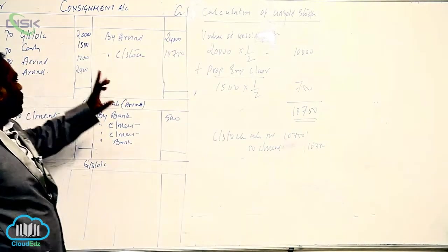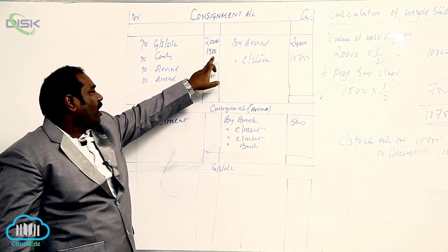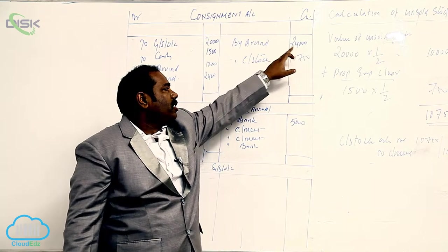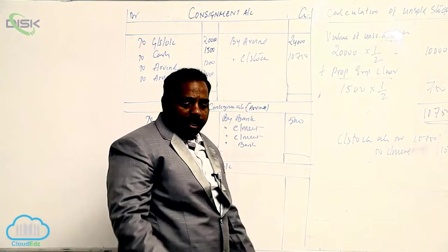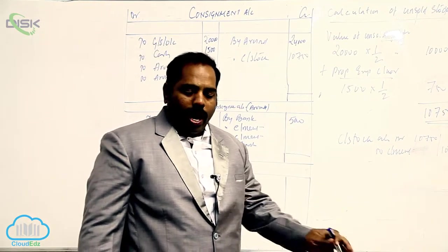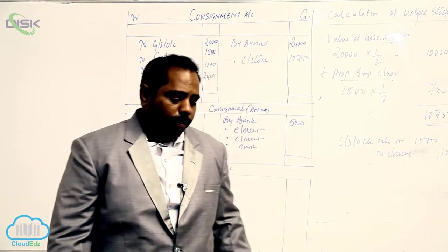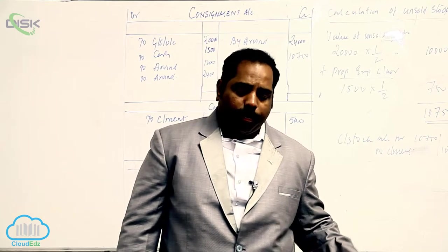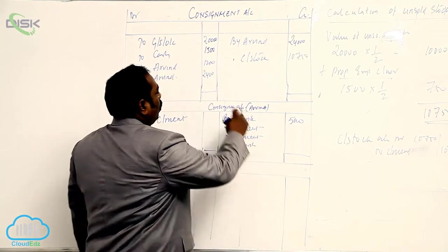To summarize: goods sent on consignment — 20,000; expenses by consignor — 1,500; expenses by consignee — 1,200; sales — 24,000; commission at 10% — 2,400; unsold stock — 10,750. There is also a bad debt of 240. Since we are paying del credere commission, the consignee bears that loss — no entry in the consignor's books.